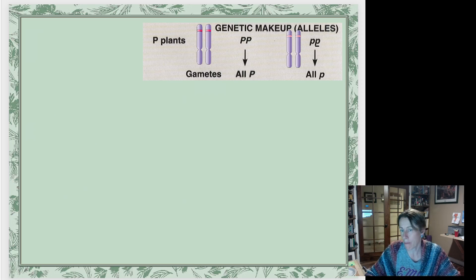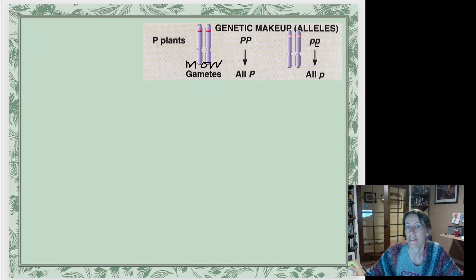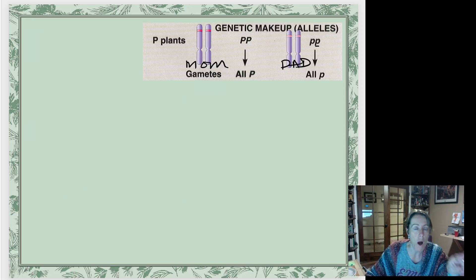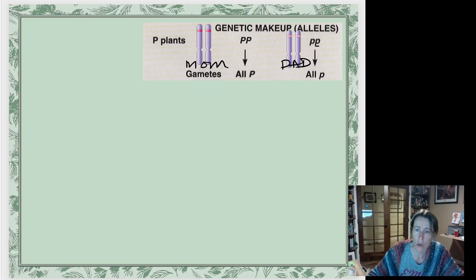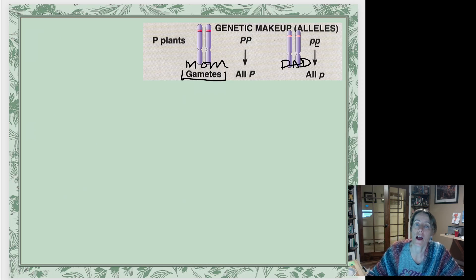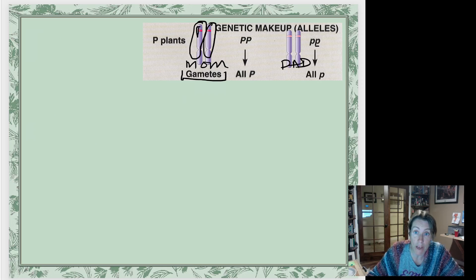That's the parents. But if they're going to make babies, they've got to make eggs or sperm. This is the purple-flowered mom and this is the white-flowered dad. When the mom makes her eggs, she has to make sure each egg gets only one of each pair of chromosomes — remember meiosis. 50% of her eggs will get one chromosome and 50% will get the other. In this case it doesn't matter which they get because both chromosomes have an uppercase P.